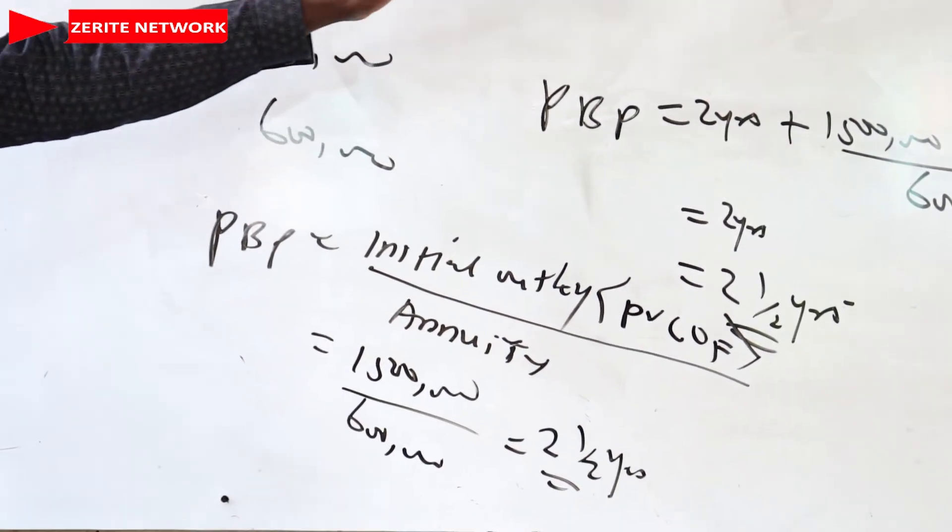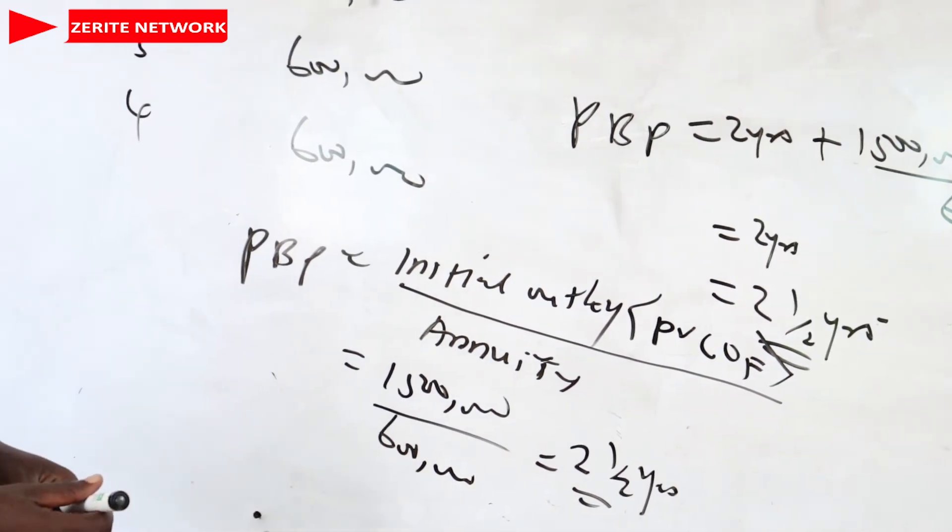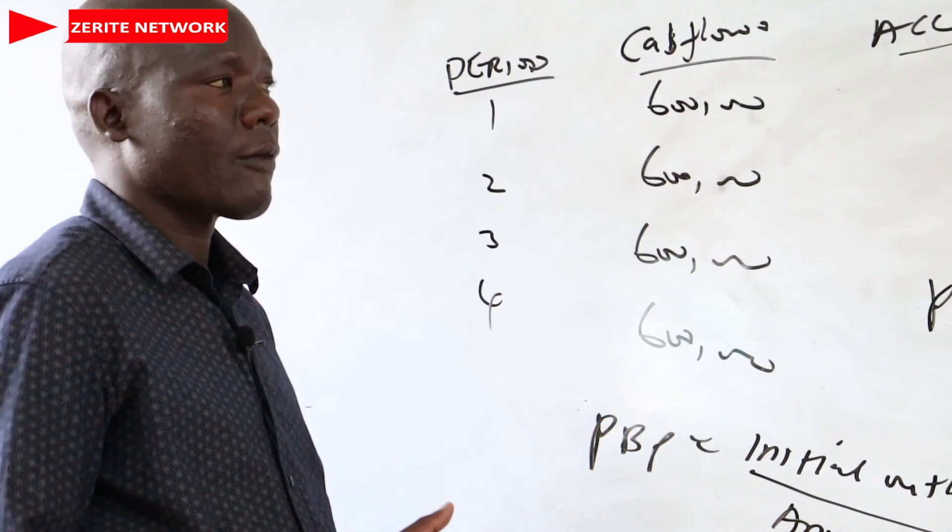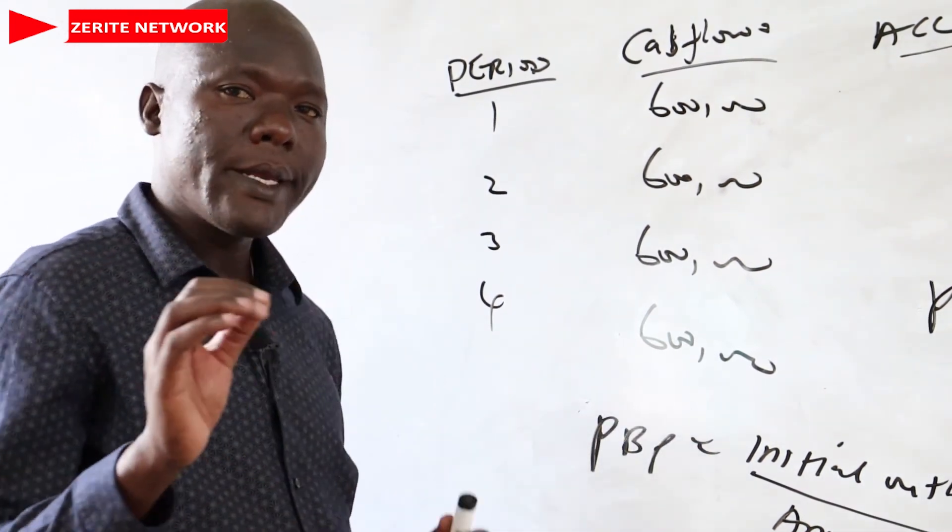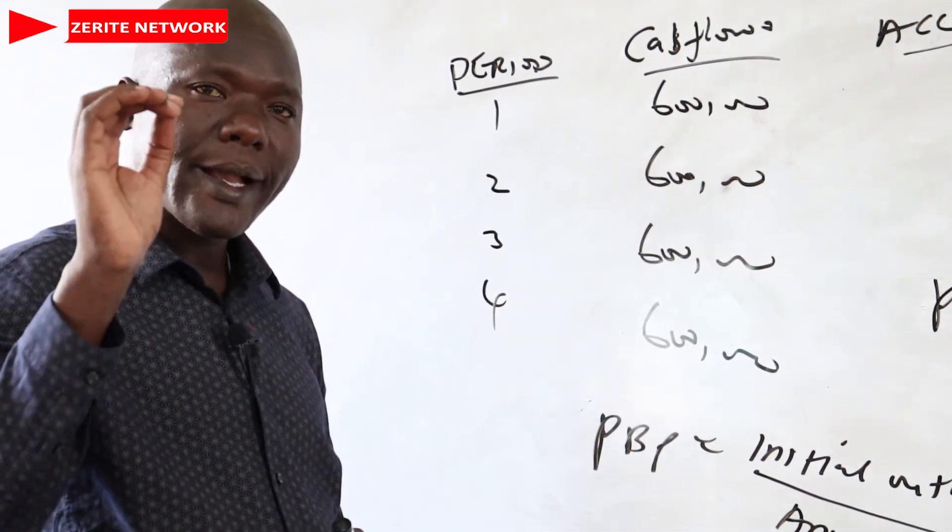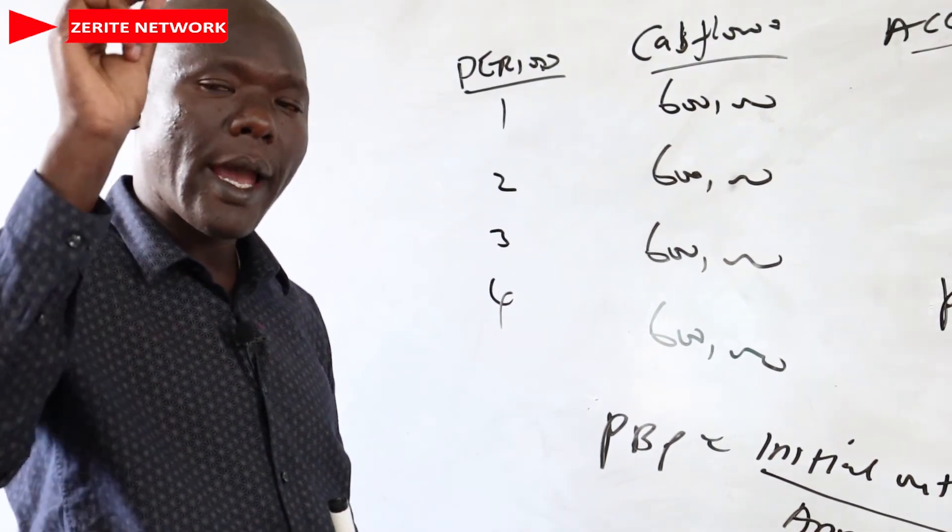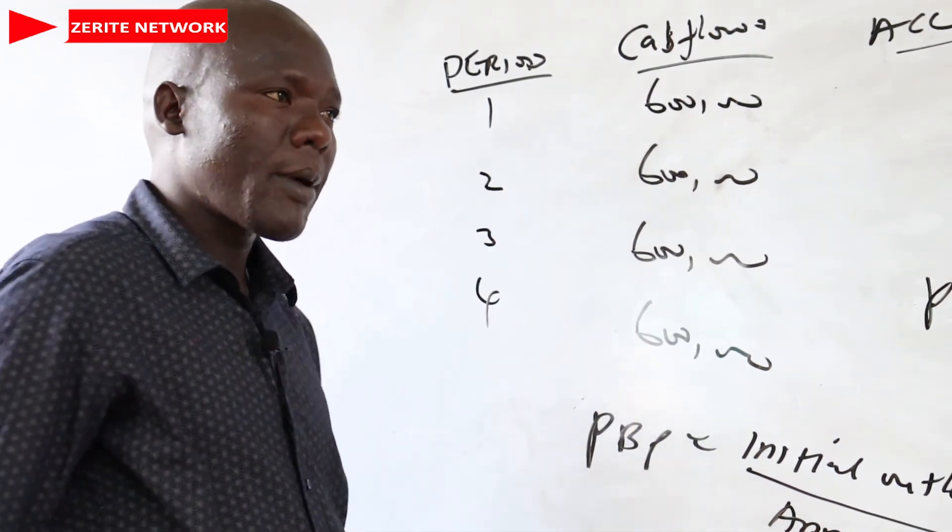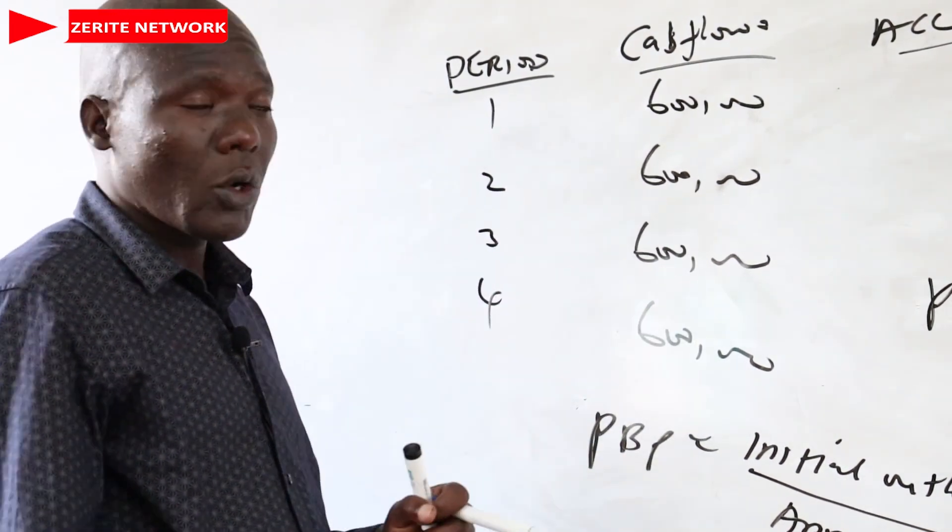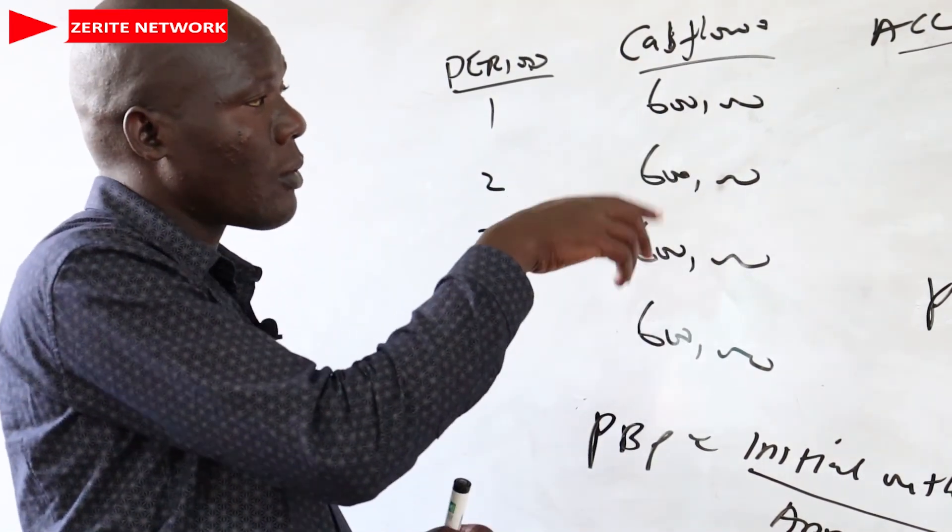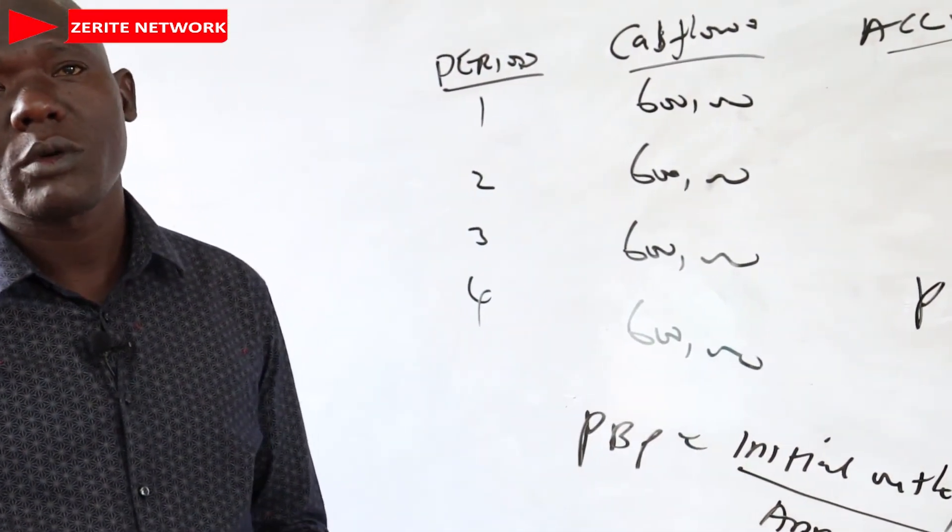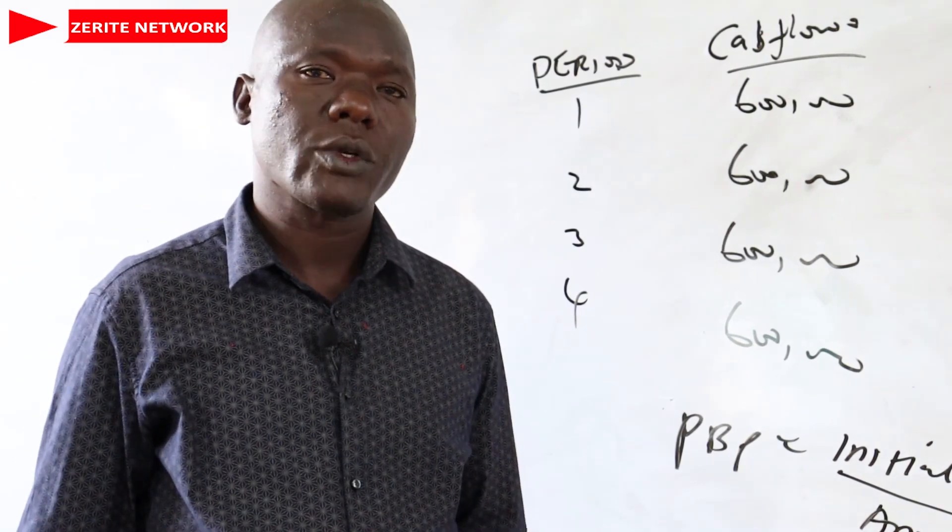So it is good. If you fail to do it using the formula, then using the accumulated cash flow, you use the formula form. But this one is applicable only where the cash flow promises annuity up to the end. That's where you are allowed to use the formula. But if it is not an annuity, we use the method of accumulated cash flow. That is how we are supposed to approach a question of payback.